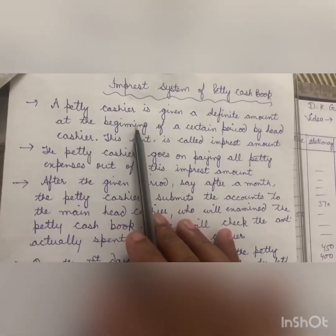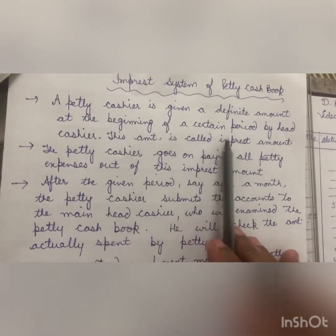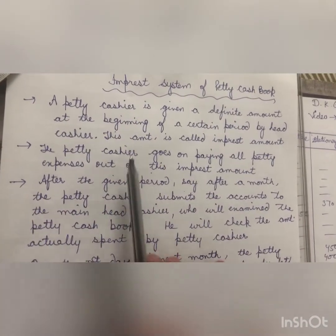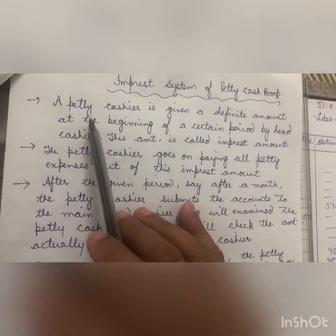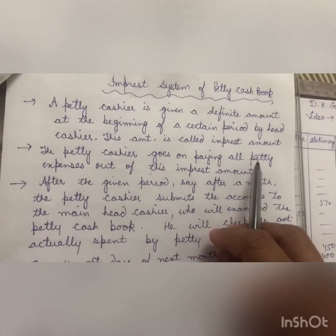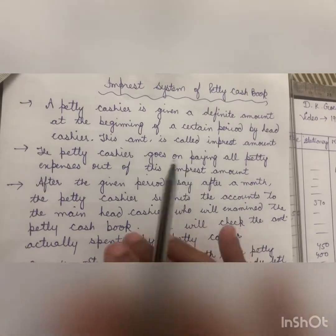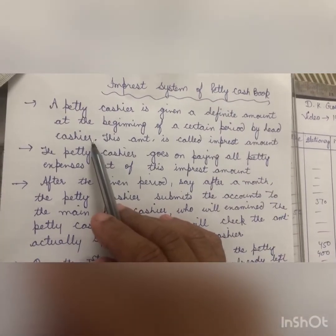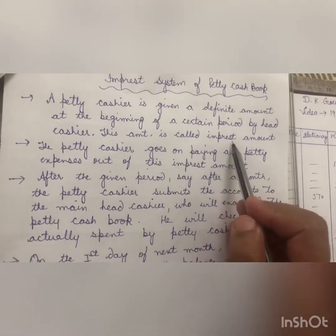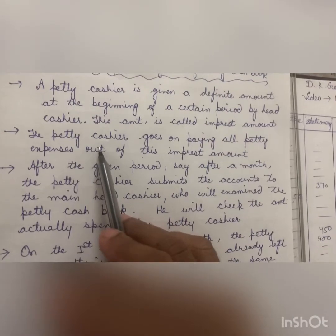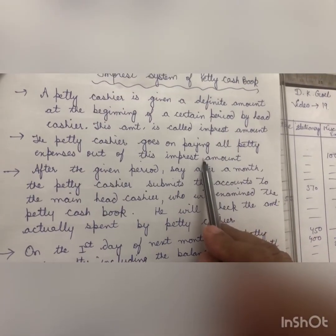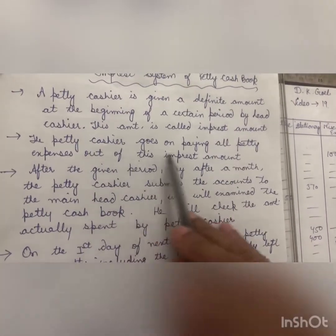A petty cashier is given a definite amount at the beginning of a certain period by the head cashier. For example, on 1st April, the head cashier gives some amount to the petty cashier for spending on small expenses. Jo amount head cashier petty cashier ko deta hai, that amount is called the imprest amount. The petty cashier goes on paying all petty expenses out of this imprest amount.